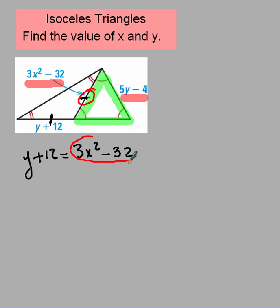So I can end up replacing the 3x squared minus 32 with 5y minus 4. Once I do that, that's going to make things a lot easier for me. So then now we're going to just have an algebra problem where we'll have the y plus 12, and we're going to set that equal to just 5y minus 4 because we're going to make that substitution.